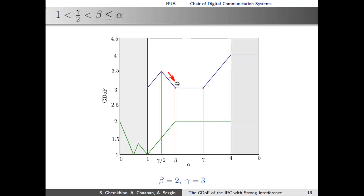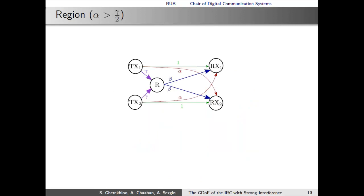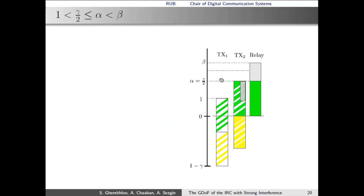What happens in this regime is that interference becomes larger, such that the second transmitter has to reduce the size of the gray signal in order to be able to neutralize all the interference. So, this is the point where alpha is equal to gamma over 2. Now, when we increase alpha more, then we observe that the gray signal cannot be decoded anymore. We have to reduce the size of this block in order to move up the green signal of the relay in order to be able to neutralize this part.